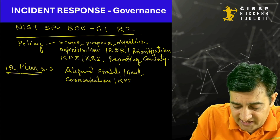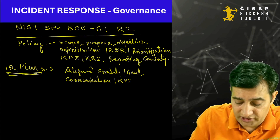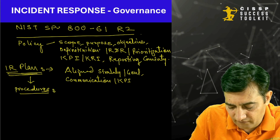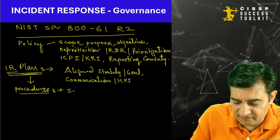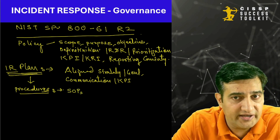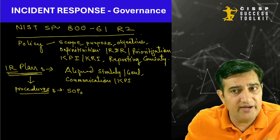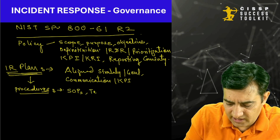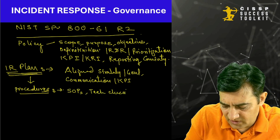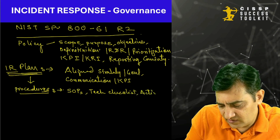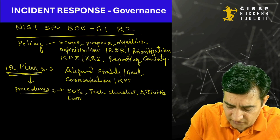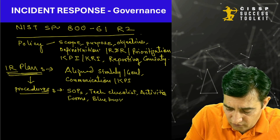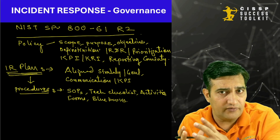Once you define the incident response plan — which is a high-level plan — you need further procedures. These procedures will go fine-grained, and for each and every activity you might be defining SOPs, standard operating procedures. These might be some technical processes, technical checklists, some activities, forms which you are going to fill up, and some playbooks to follow. That is what comes under the layer of procedures.